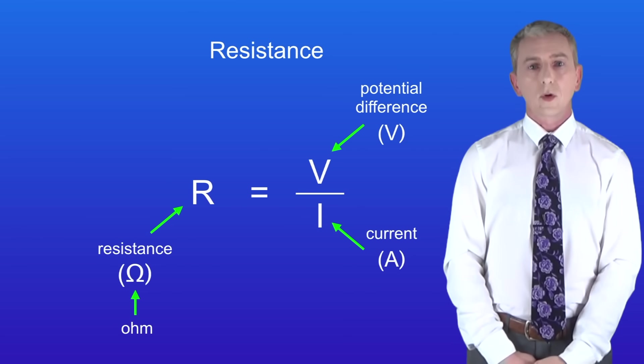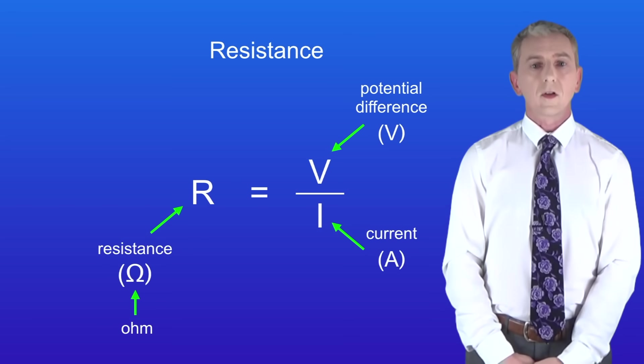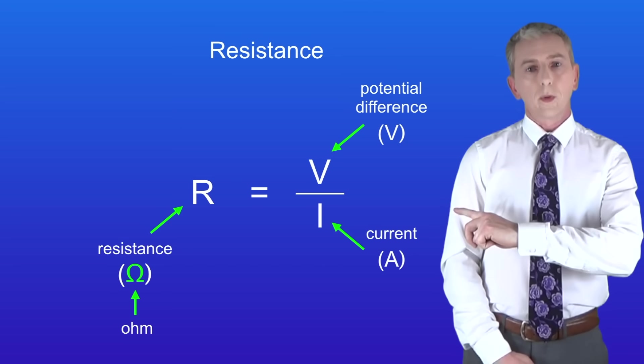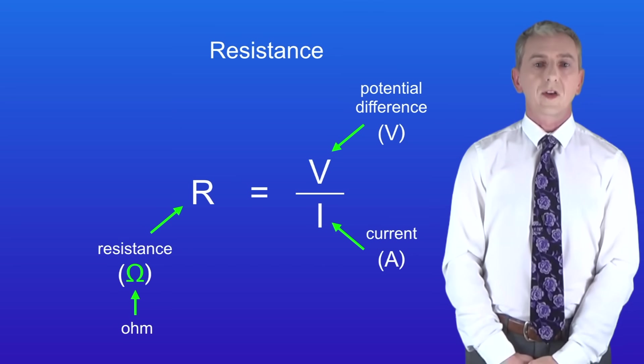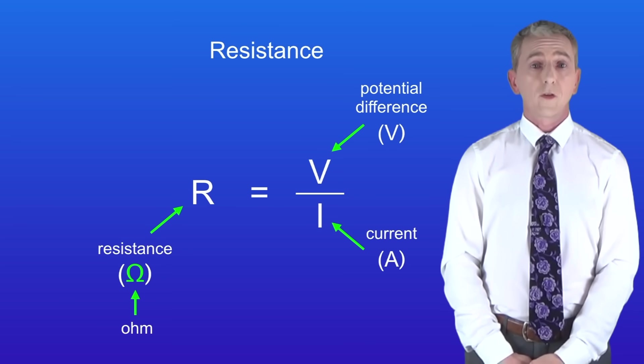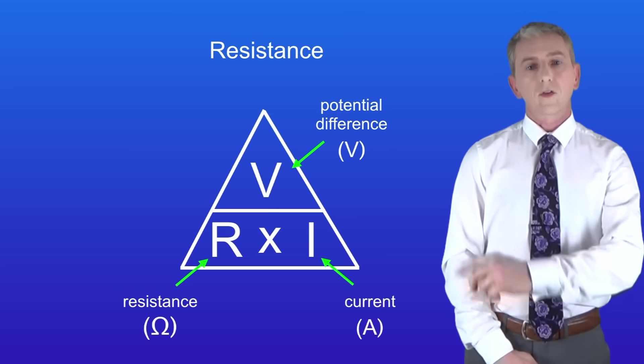The resistance equals the potential difference in volts divided by the current in amperes. The unit for resistance is the ohm and you could be asked that. Here's the symbol for the ohm. Now you're not given this equation in the exam so you need to learn it. Many students prefer to use a triangle for equations so here's a triangle for this equation.